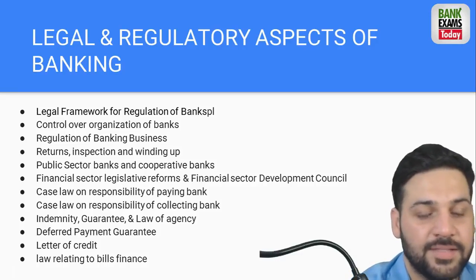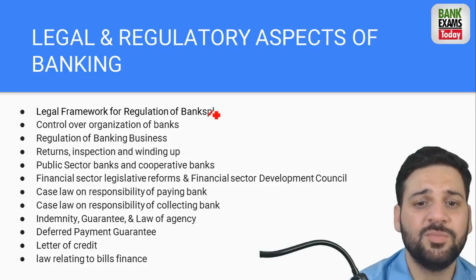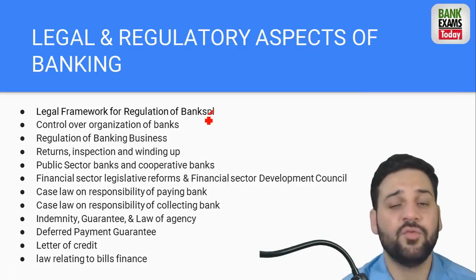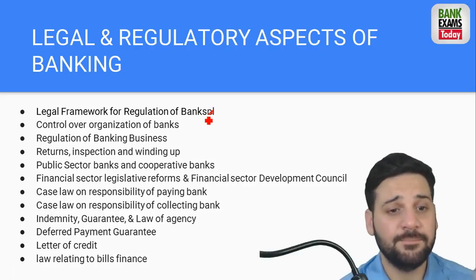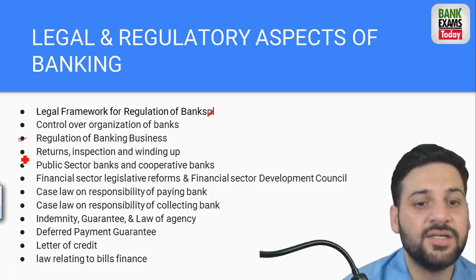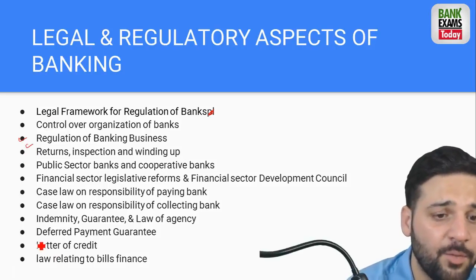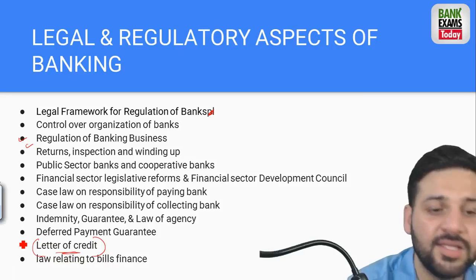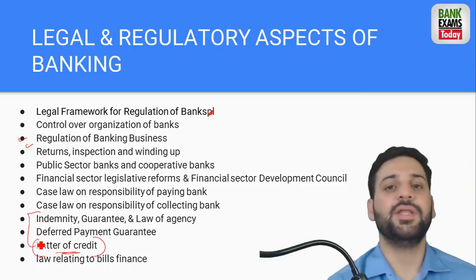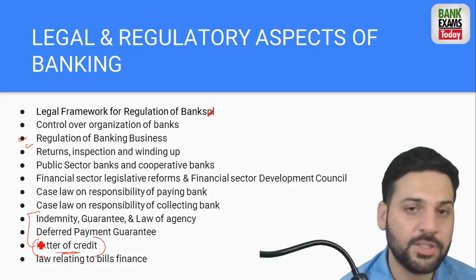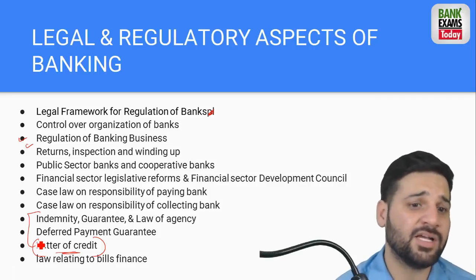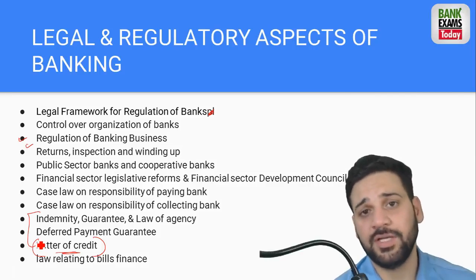In the Legal and Regulatory Aspects paper, you need to read all the banking related acts. The most important is the Negotiable Instruments Act - you must read it. Topics include regulation of banking business, returns and inspection, winding up. LC (Letter of Credit) is a very important topic - every paper has 2-3 questions from it. Deferred payment, guarantee, indemnity, guarantee and law of agency, company law - these are all covered. Contract Act, Company Law, and Negotiable Instruments - these 3 acts have the maximum number of questions.